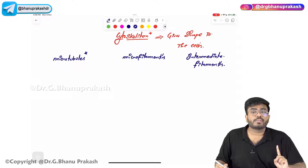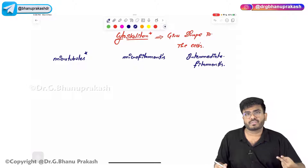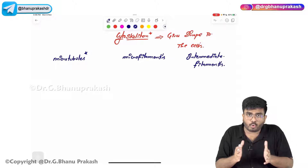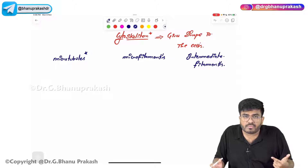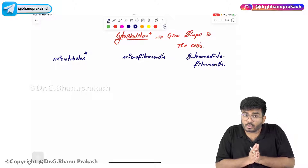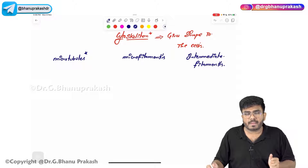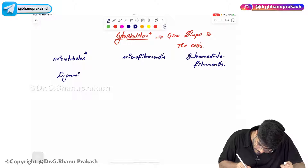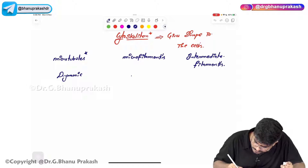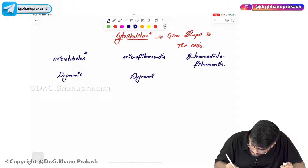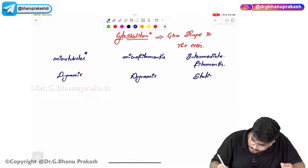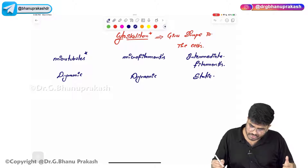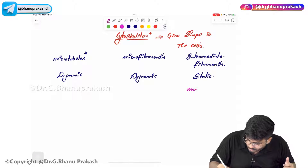Out of these three, one is not going to grow and the other two grow continuously as the cell ages. The cytoskeleton is dynamic in nature, not static. Microtubules and microfilaments are dynamic, but intermediate filaments are static. The most abundant cytoskeletal structure is the intermediate filament.